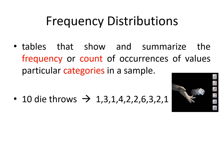For example, out of 10 die throws, you have these outcomes: a three, a one, a three, a one, a four, a two, a two, a six, a three, and a one. This is your raw data and it's not very organized.